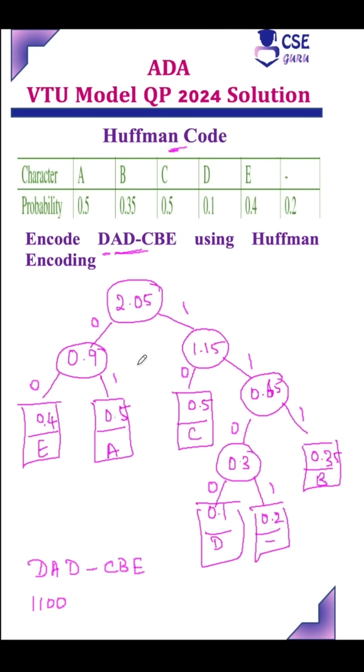For D it is 1100, for A it is 01, and for D it is 1100, and for hyphen it is 1101, and for C it is 10, and for B it is 1100, and for E it is 00.